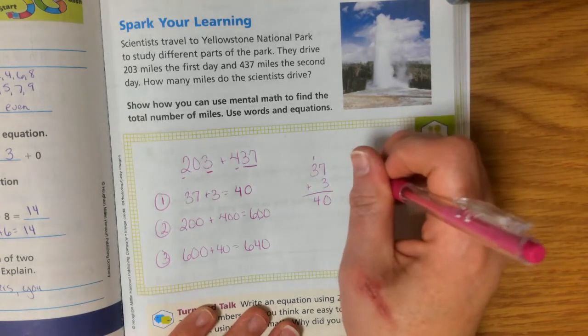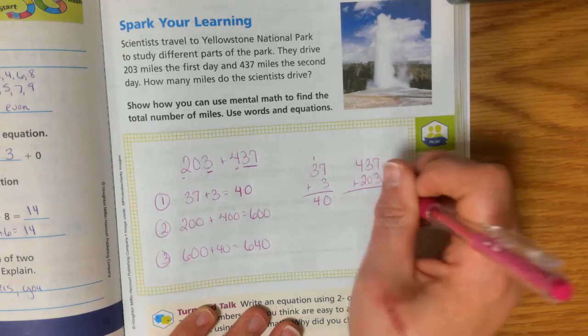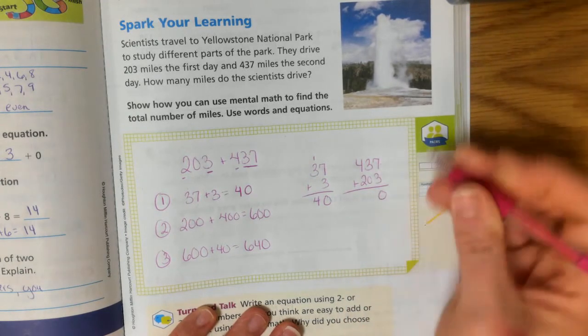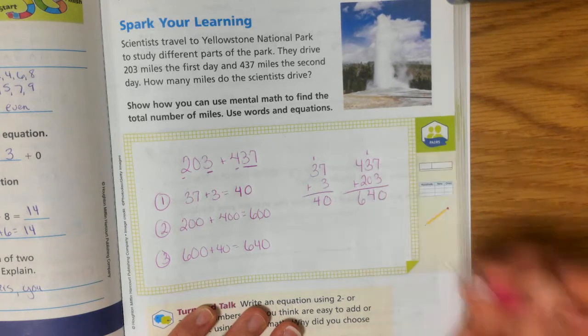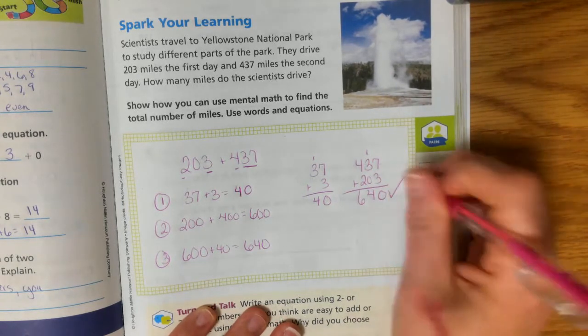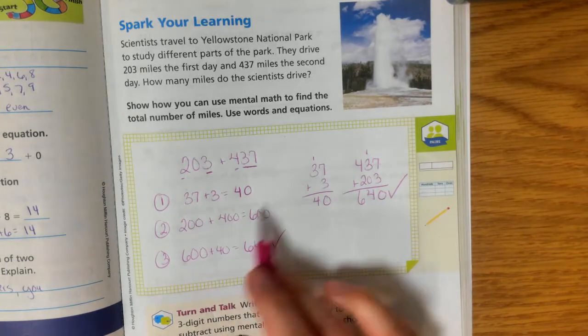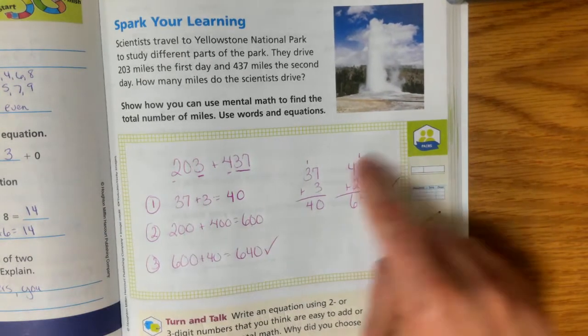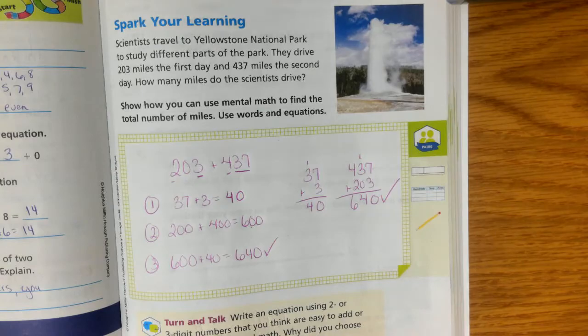Now let's double check and see if that's right. So if I have 437 plus 203, 7 plus 3 is 10, regroup my 1. 1 plus 3 is 4, and 4 plus 2 is 6. 640. So it works, right? A little check mark to show that it works. But I can do some of this work right in my head without having to do the work over here by regrouping.